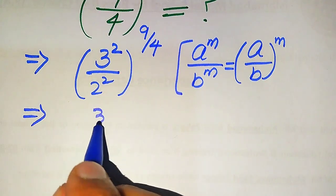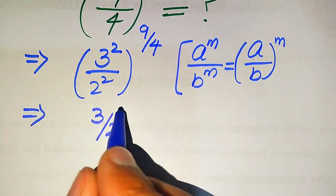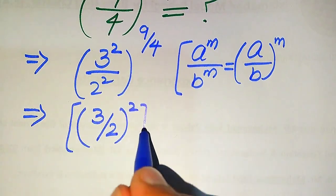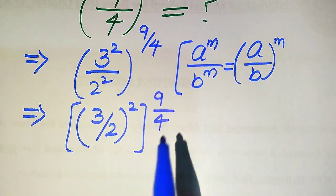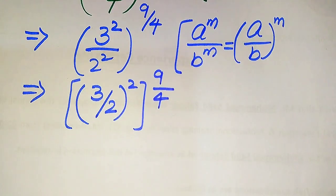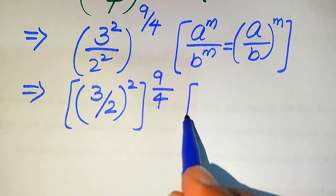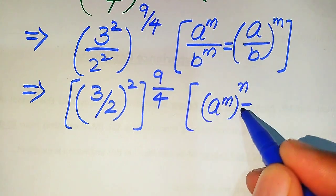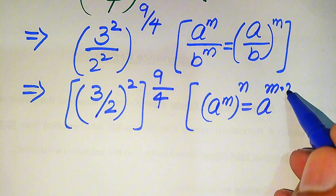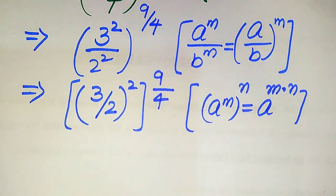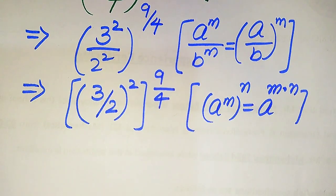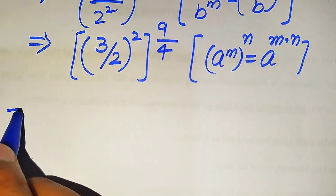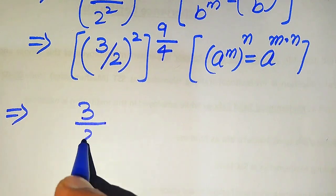When we combine the exponents of these two terms, it will be written as (3 over 2) whole squared, and its whole power is 9 divided by 4. Now we use another exponential law: if we have a to the power of m, to the power of n, it equals a to the power of m multiplied by n. According to this exponential law, we just multiply these two exponents.